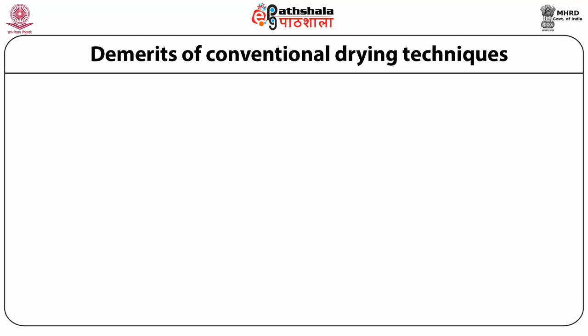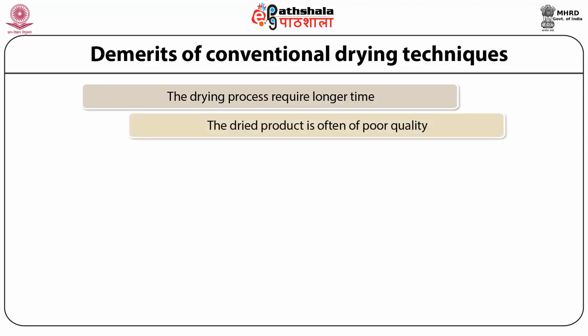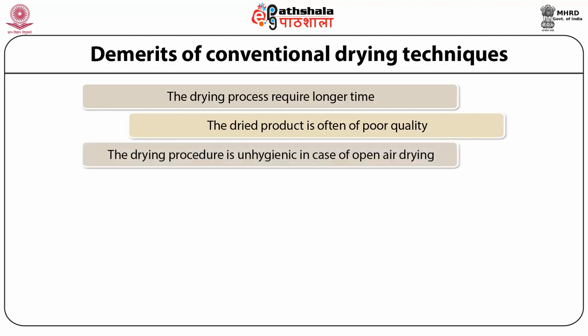The first disadvantage is that the drying process requires longer time compared to advanced drying processes. The dried product is often of poor quality because in case of open drying it is not hygienically maintained — dust comes and sticks with the cut fruits and vegetables, so the drying process is unhygienic in case of open air drying.